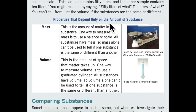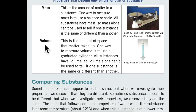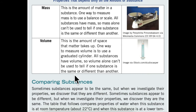Properties that depend only on the amount of substance. Mass: This is the amount of matter in a substance. One way to measure mass is to use a balance or scale. All substances have mass, so mass alone can't be used to tell if one substance is the same or different than another. Volume: This is the amount of space that matter takes up. One way to measure volume is to use a graduated cylinder. All substances have volume, so volume alone can't be used to tell if one substance is the same or different than another.